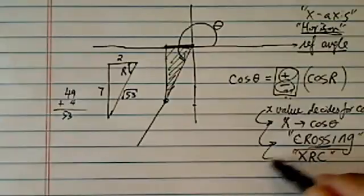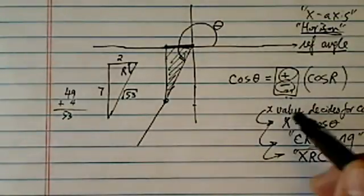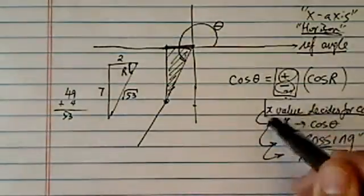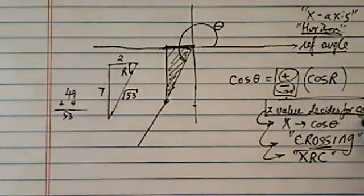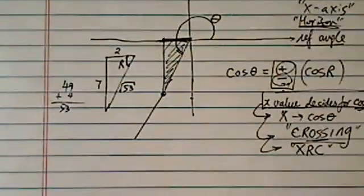Now if this analogy doesn't float with your boat, come up with something else. But anyway, the main point is x value decides the signs for the cosine theta. So for our case,